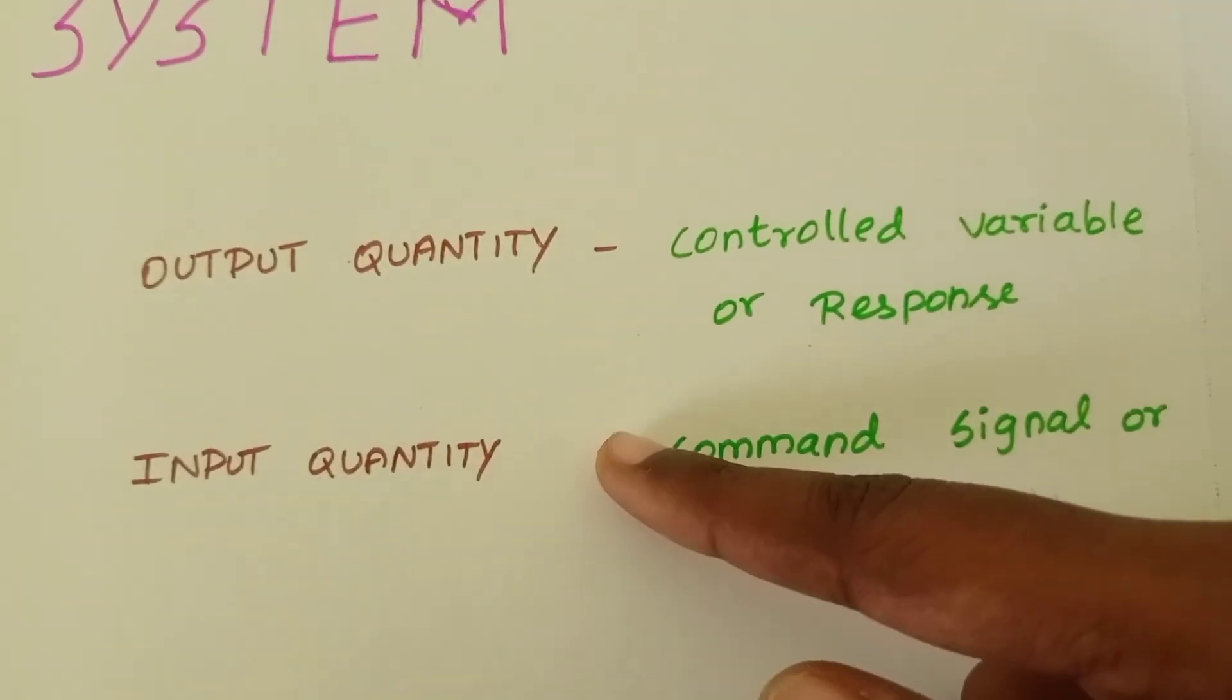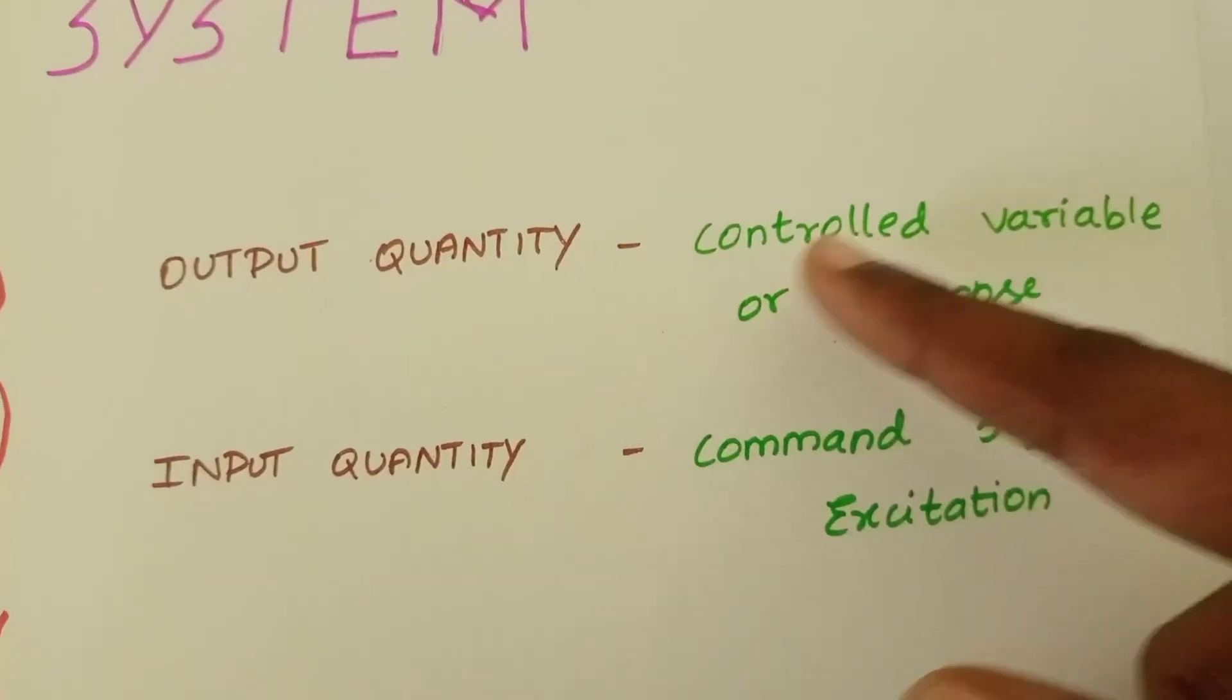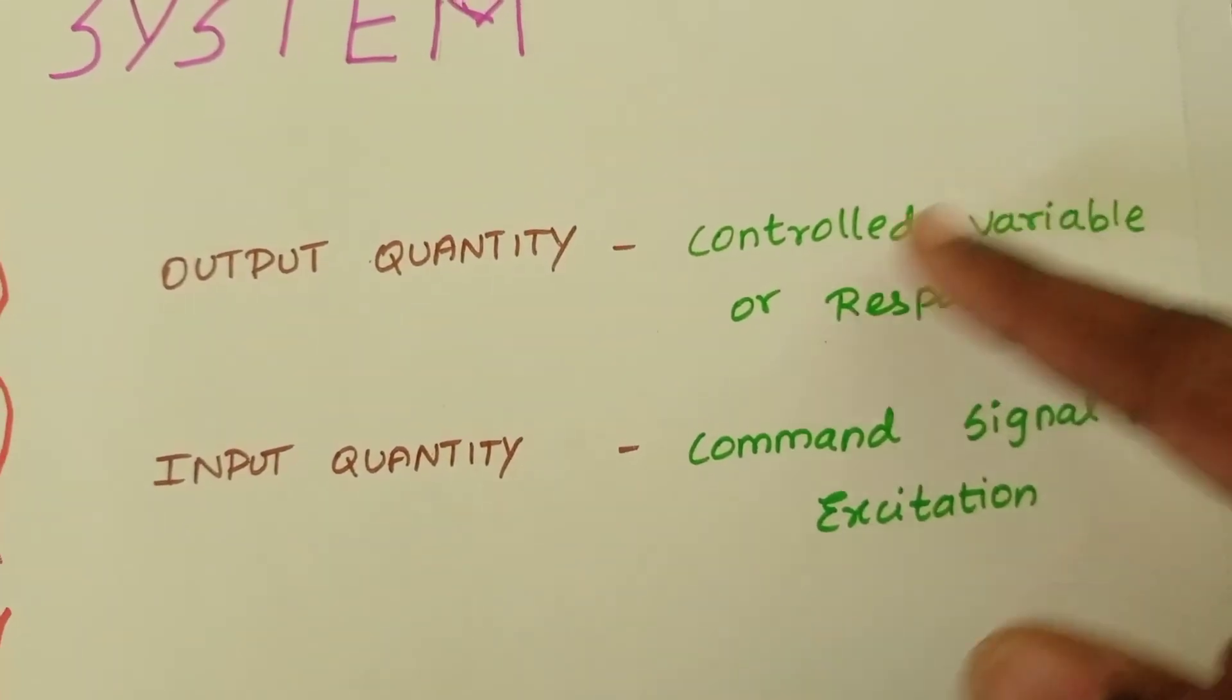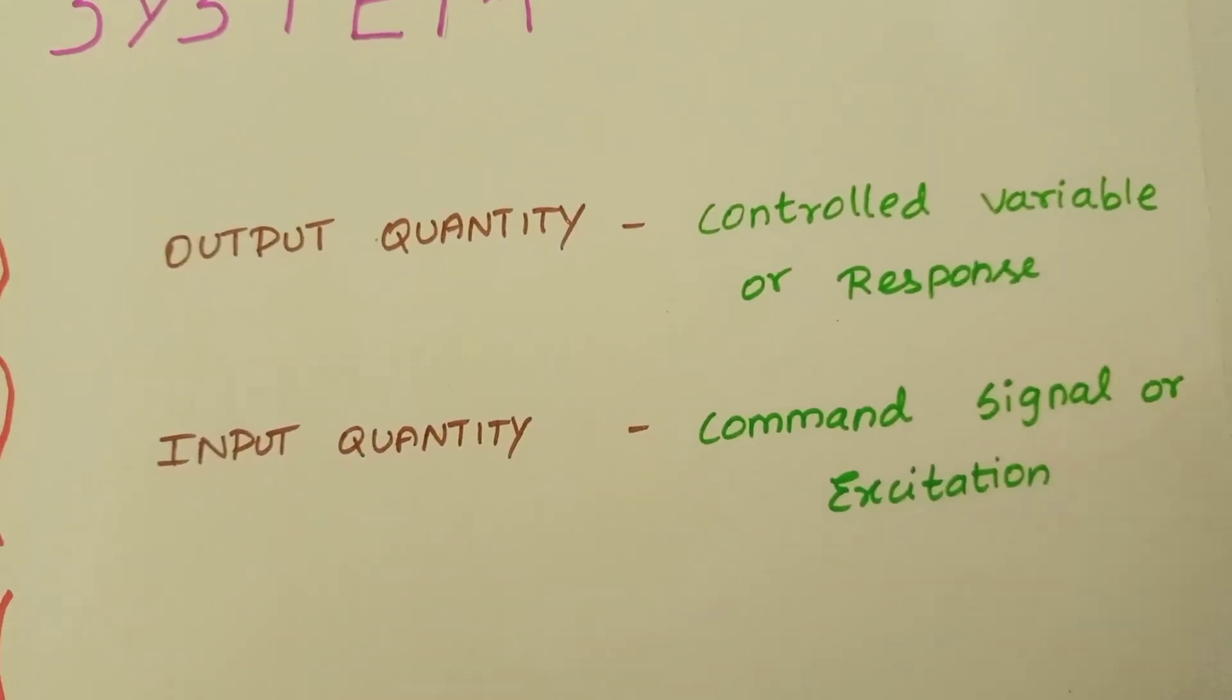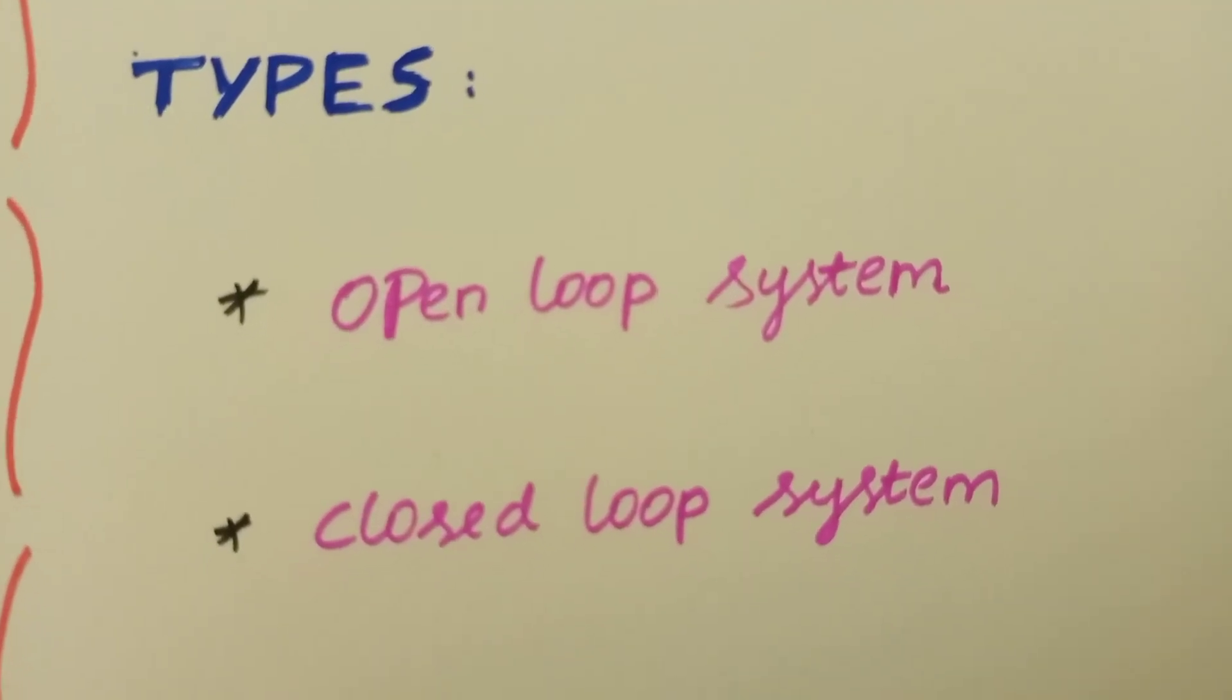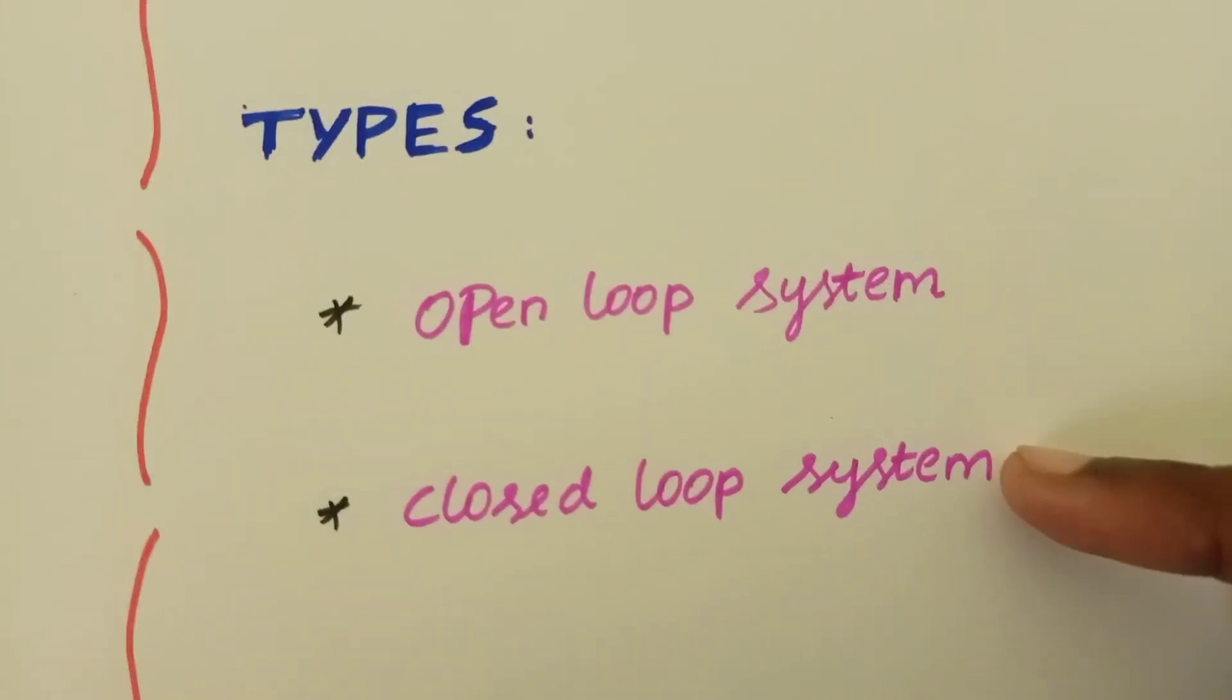The output quantity is called the controlled variable or the response. The input quantity is called the command signal or the excitation. The control system has two types: first one is open loop system and another one is closed loop system.